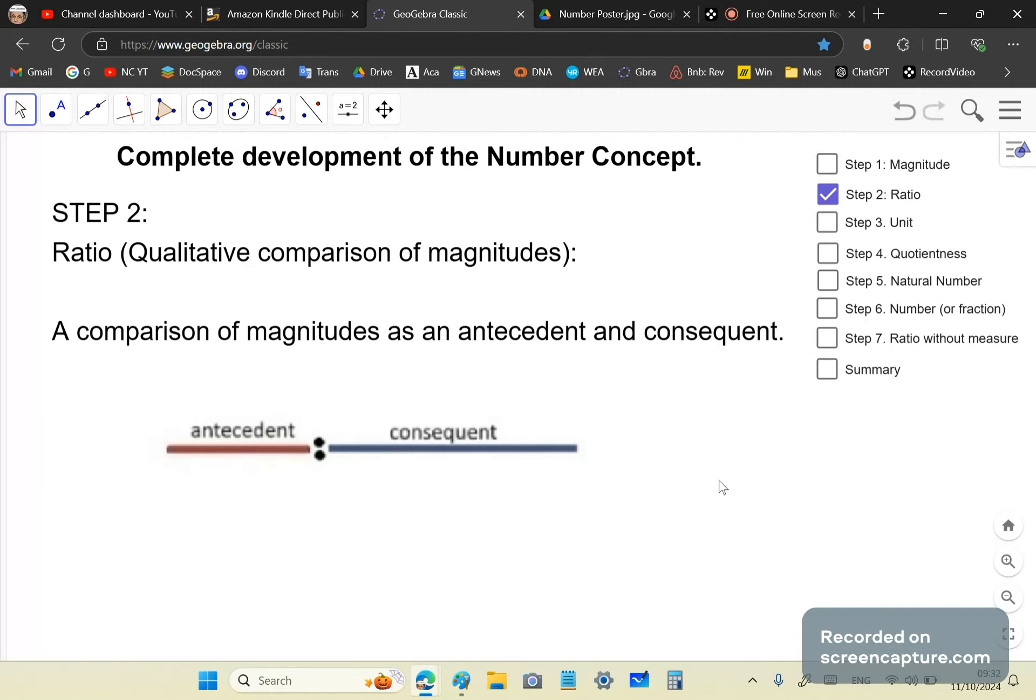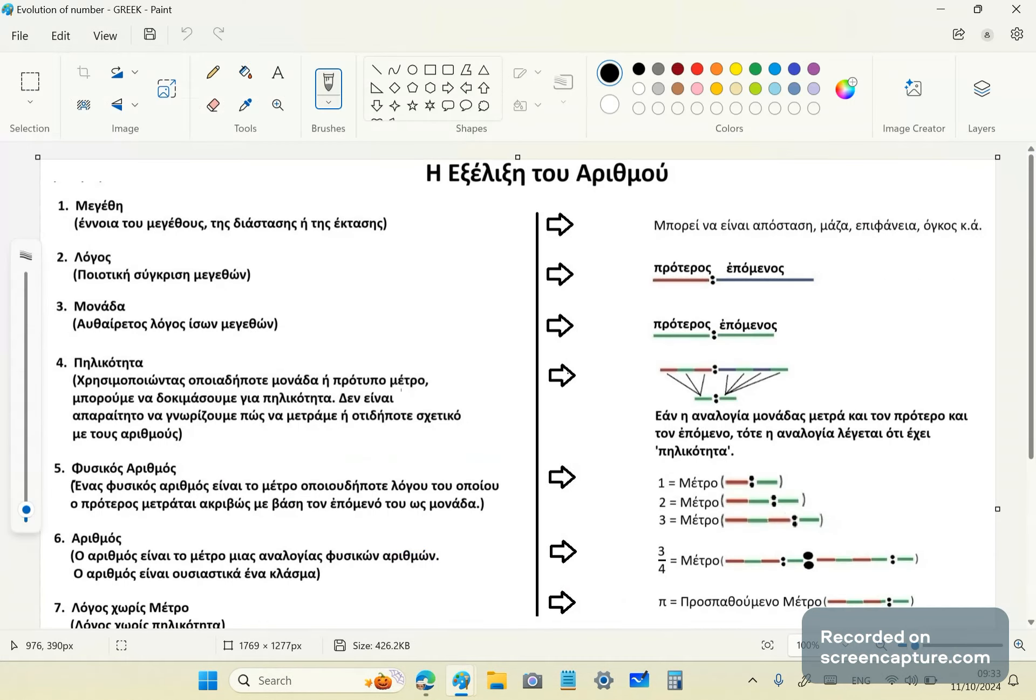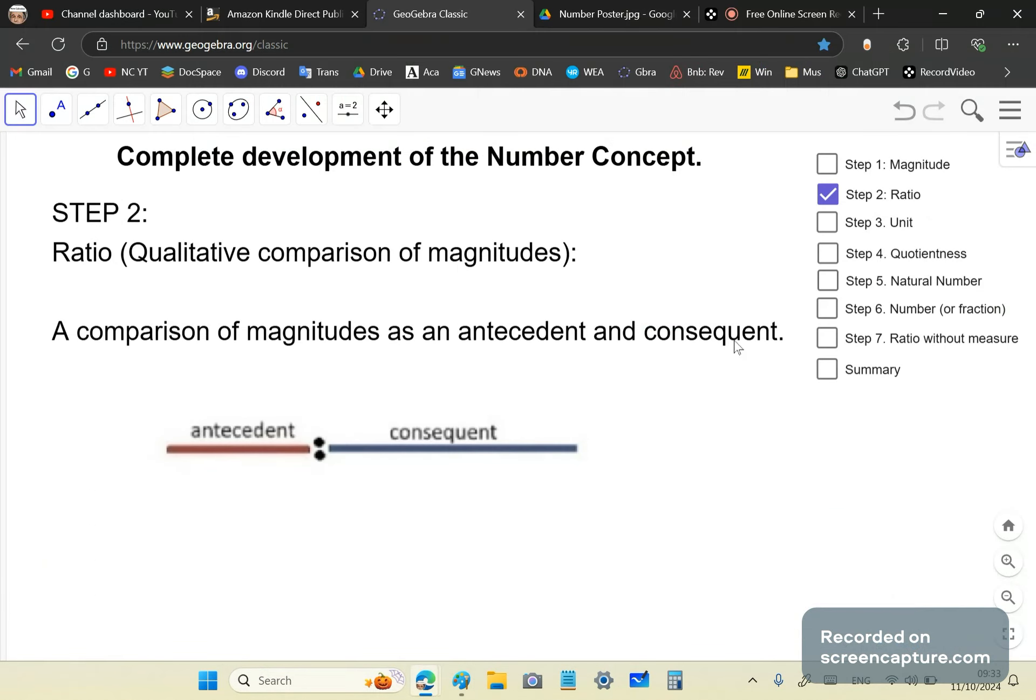The second step is a ratio. What is a ratio? It's just a qualitative comparison of two magnitudes. As you see here, there's a red line distance and a looks like a blue line distance or a black one, which is the consequent. This is called the antecedent distance and the consequent distance. And all we're doing with the ratio is we're just comparing the two. At first, it's qualitative. We don't have anything else that we can do. This here in the Greek is known as logos, and the antecedent is called proteros and the consequent epaminos.